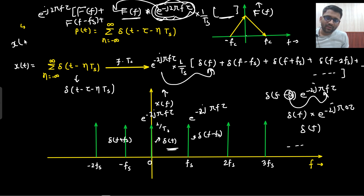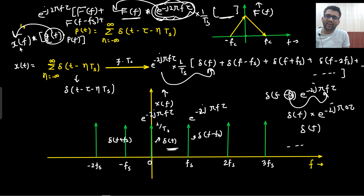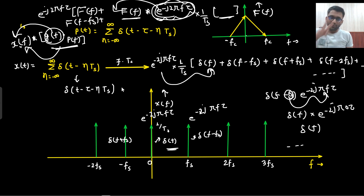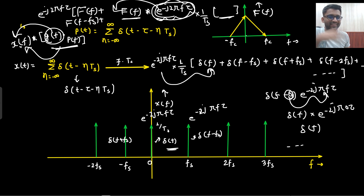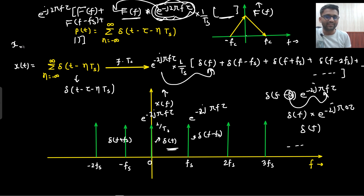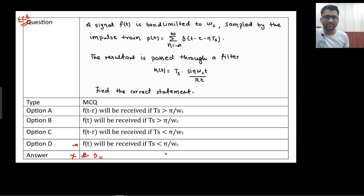If you are doing convolution of X(F) with [G(F) · P(F)], you cannot take G(F) outside and say it equals G(F) · [X(F) convolved with P(F)] — no, you cannot do that. Two functions in multiplication must be resolved first before convolving with the other. This is the mistake that was done in the examination and that I also did when I made the solution for the first time and gave the answer as C.